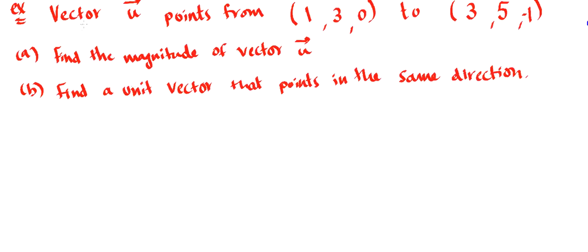So here's the example. It says we have a vector u that points from the point (1, 3, 0) to point (3, 5, -1). And the example is asking us to find the magnitude of the vector u and then to find the unit vector that points in the same direction.